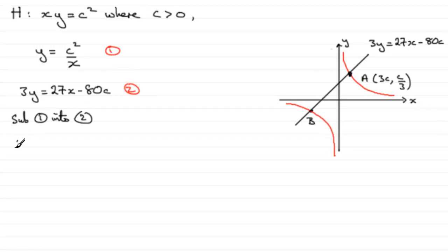And what that's going to give us is therefore 3 multiplied by C squared over X equals 27X, then minus 80C.